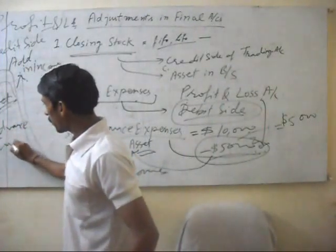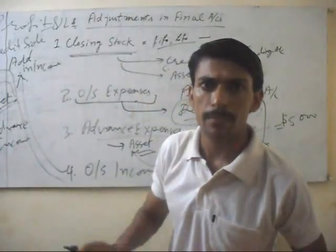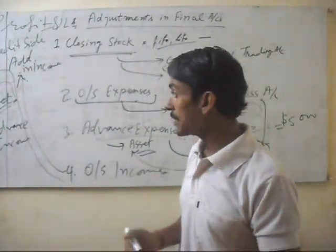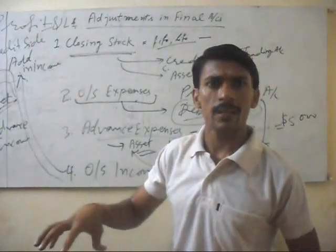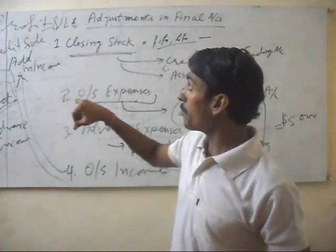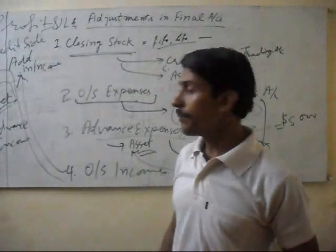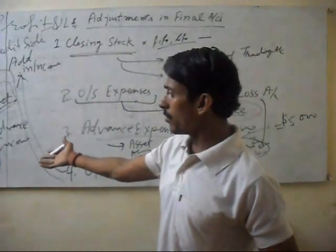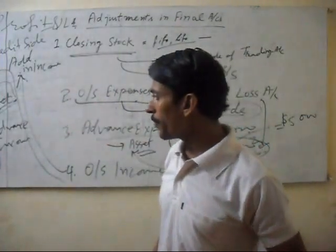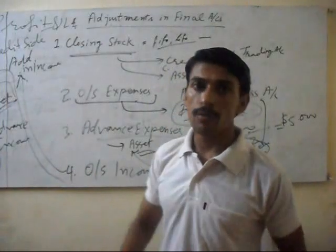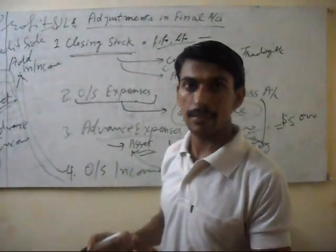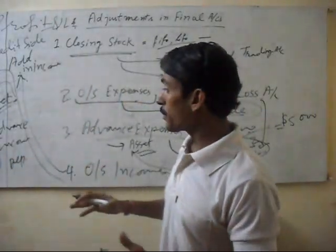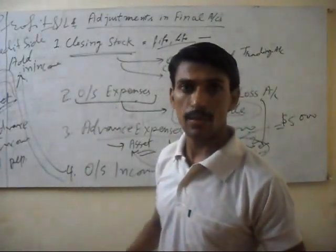Fifth is advance income. Advance income is our liability — we did not provide the service but we received money for those services. So this is our liability and it will be deducted from total income in the credit side of the profit and loss account. In the next part, we will explain other new adjustments.